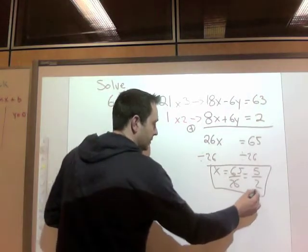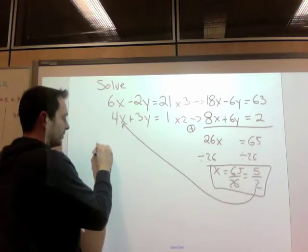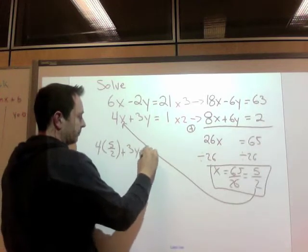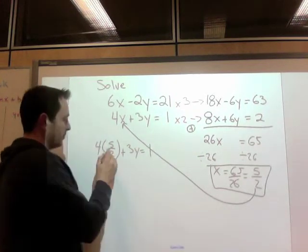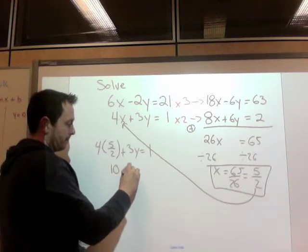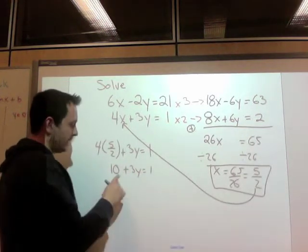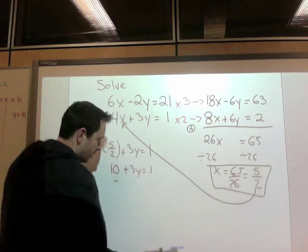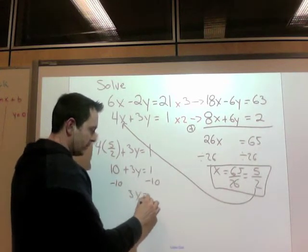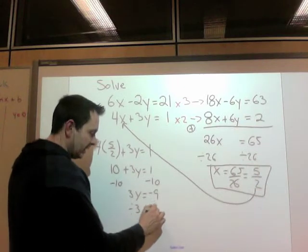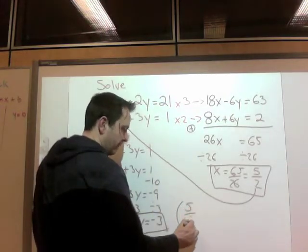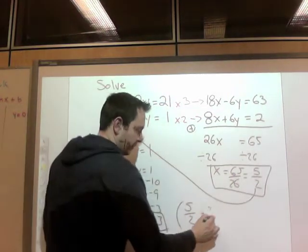So now, step 3, substitute the value 5 over 2 into x. So 4, 5 over 2 takes the x's spot, plus 3y equals 1. So now, to multiply fractions, you multiply the tops. 4 times 5 is 20. 20 divided by 2 is 10. Now, I need to get my y alone. So I'm going to subtract 10 from both sides. So I get 3y equals negative 9. Divide by 3. And y equals negative 3. So my answer is the coordinate 5 over 2 is my x. Negative 3 is my y.